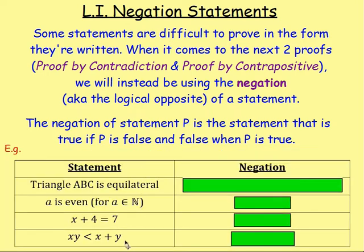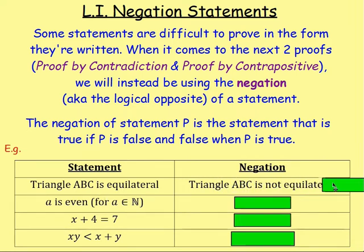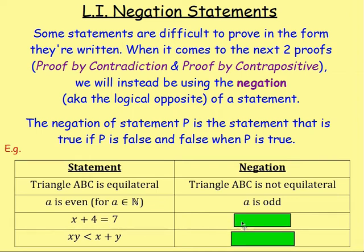Let's take these four statements and think about what the negation would be. The first statement says that triangle ABC is equilateral, so the opposite would be that ABC is not equilateral. If we had the statement that A is even, for all A belonging to the set of natural numbers, the opposite would be that A is not even — and if it's not even, you could say it's odd. So 'A is odd' would be the negation. If X + 4 = 7, the opposite would be that X + 4 ≠ 7.